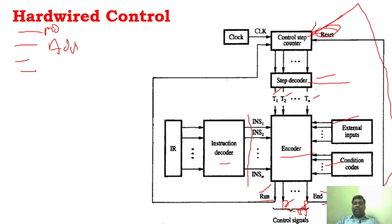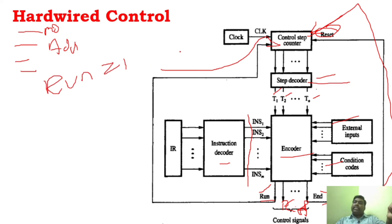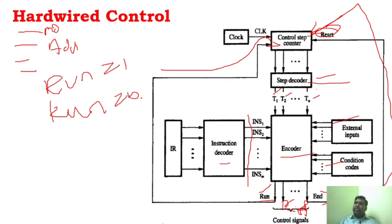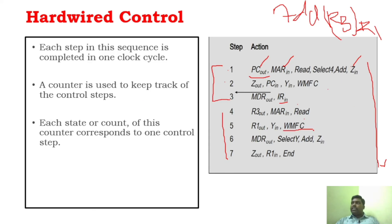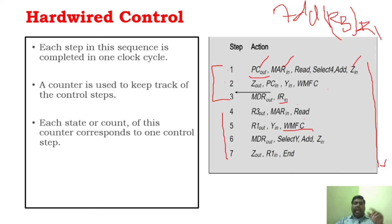Similarly, what is the run command — the run control signal? You can see that the run control signal is sent to the control step counter. Whenever the run command is set to 1, it will increment the step counter to the next instruction — it will increment the step counter for every clock cycle when run equals 1. When run equals 0, the counter will stop and no increment operation will take place. This is used whenever you are waiting for the MFC signal. No operation will take place until that particular MFC signal is received, and at that time the run control signal is set to 0.